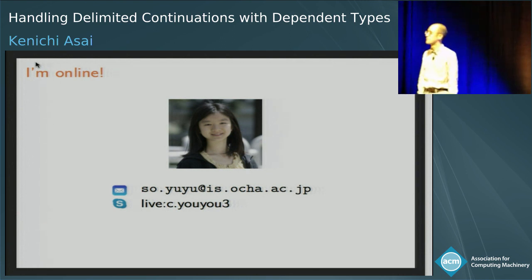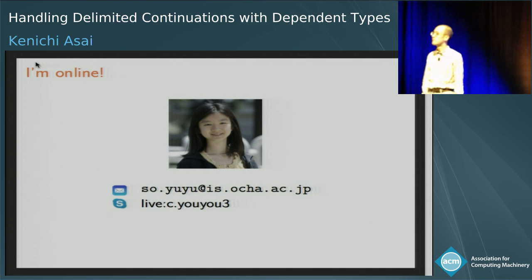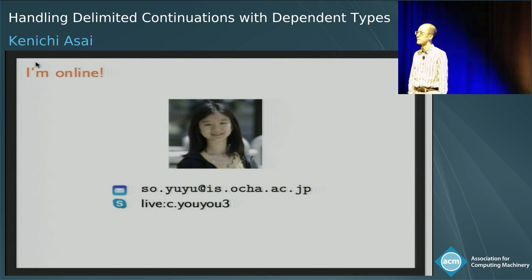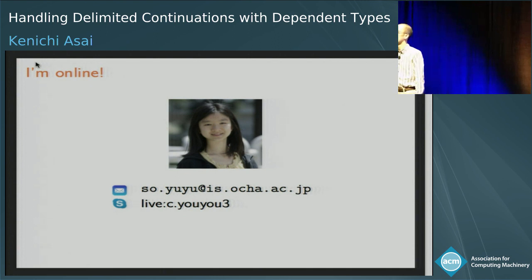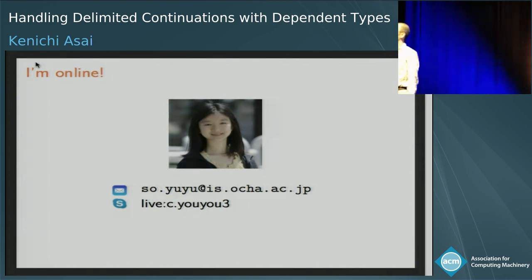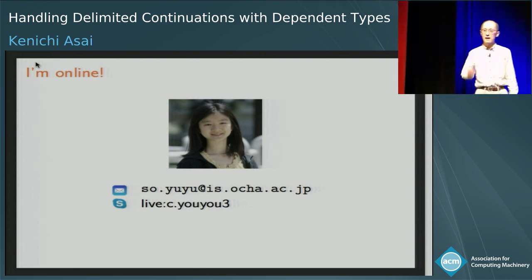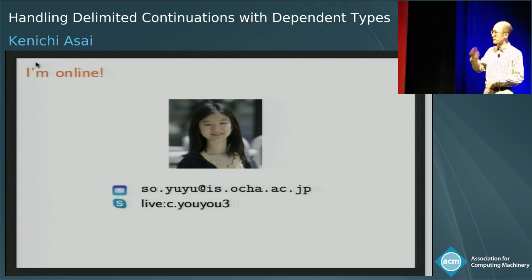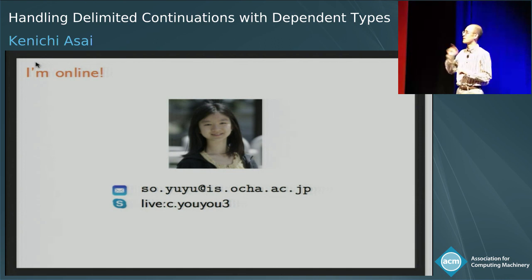Yoyo answers remotely that the language has inductive types and the approach should extend to polymorphic languages. Another question: does the approach apply to both CUC and CIC? The speaker believes so — Yoyo has already extended this with inductive types and things are going well.